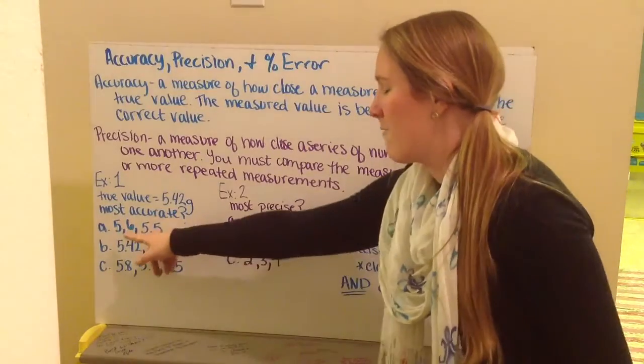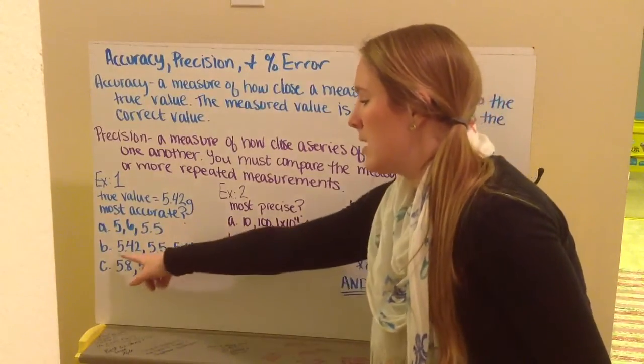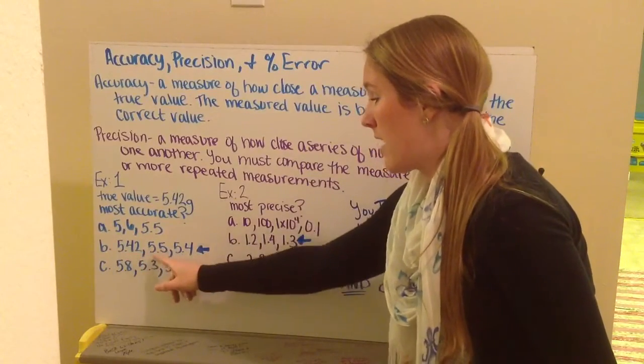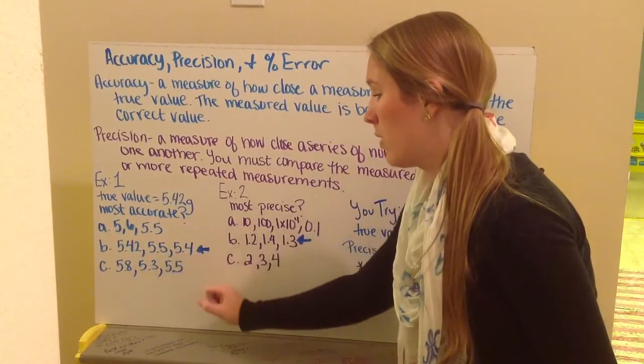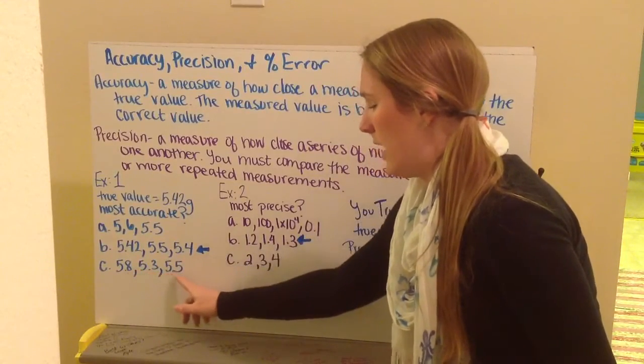A, I have 5, 6, 5.5. B, 5.42, 5.5, 5.4. Or C, 5.8, 5.3, 5.5.